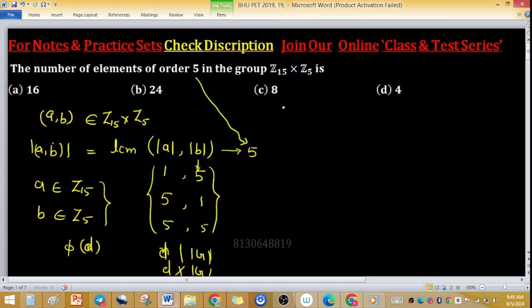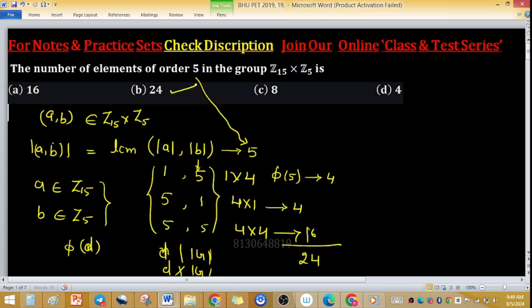So for (1,5): 1 × 4 = 4 possibilities. For (5,1): 4 × 1 = 4 possibilities. For (5,5): 4 × 4 = 16 possibilities. The total is 4 + 4 + 16 = 24, so option (b) is correct.